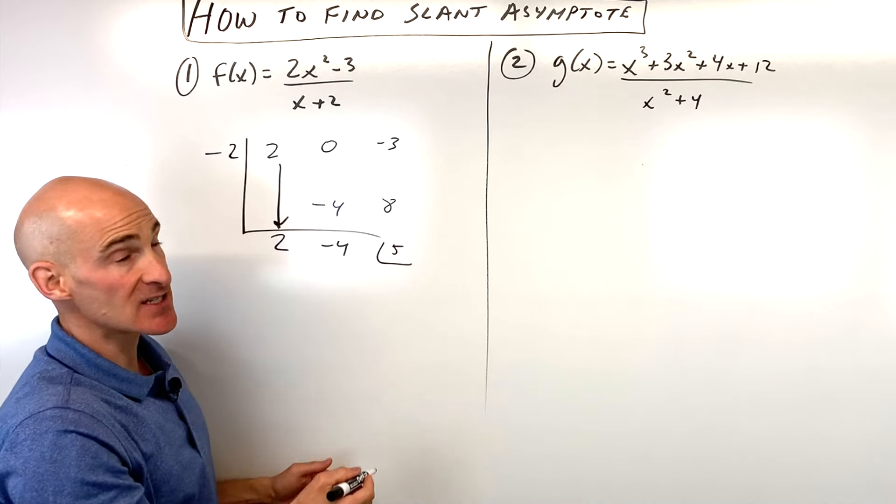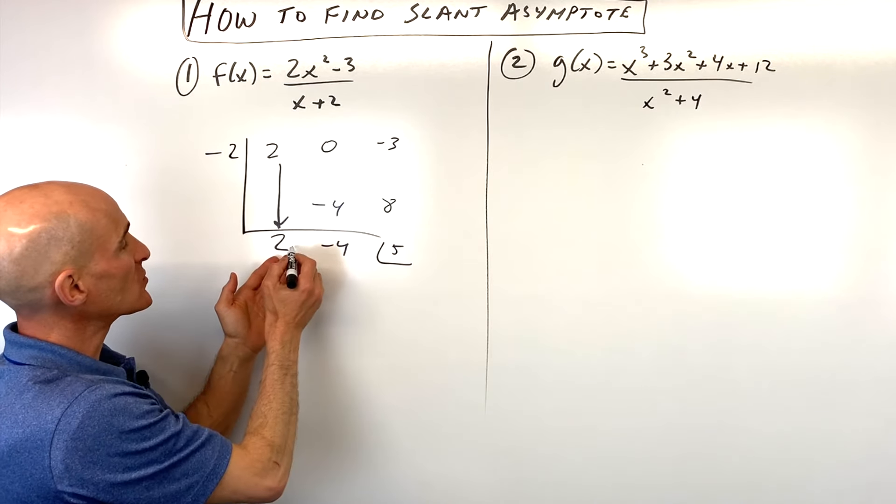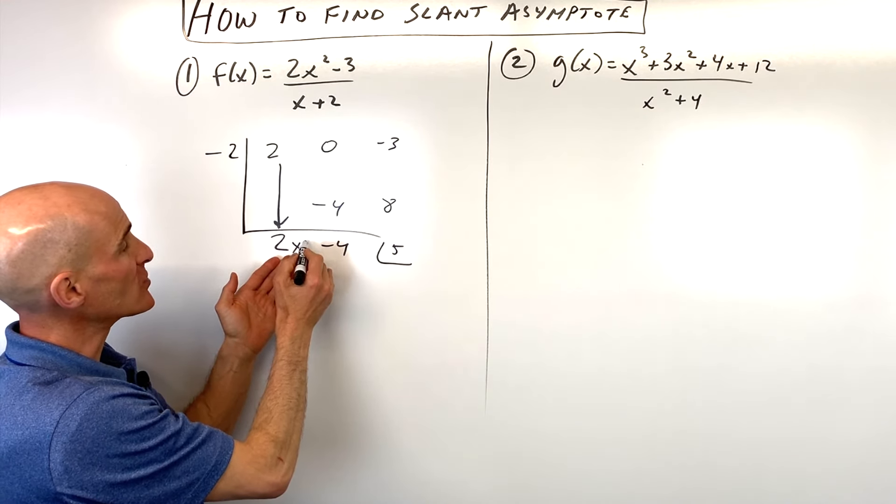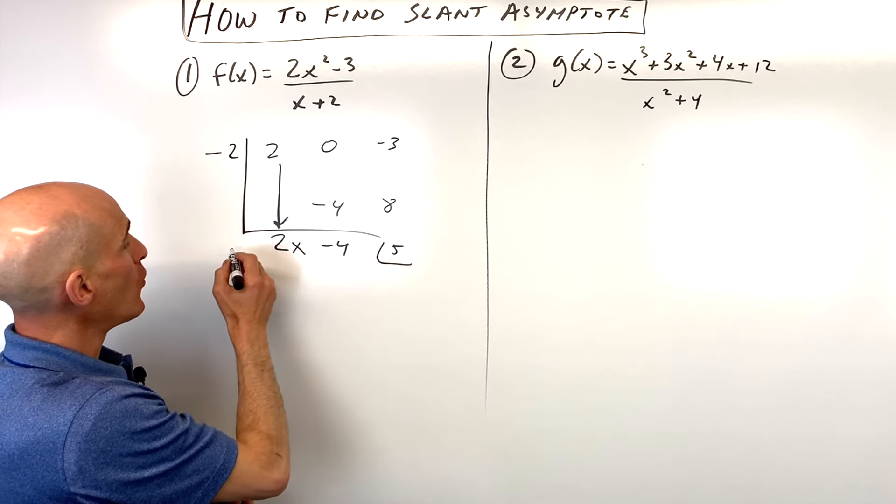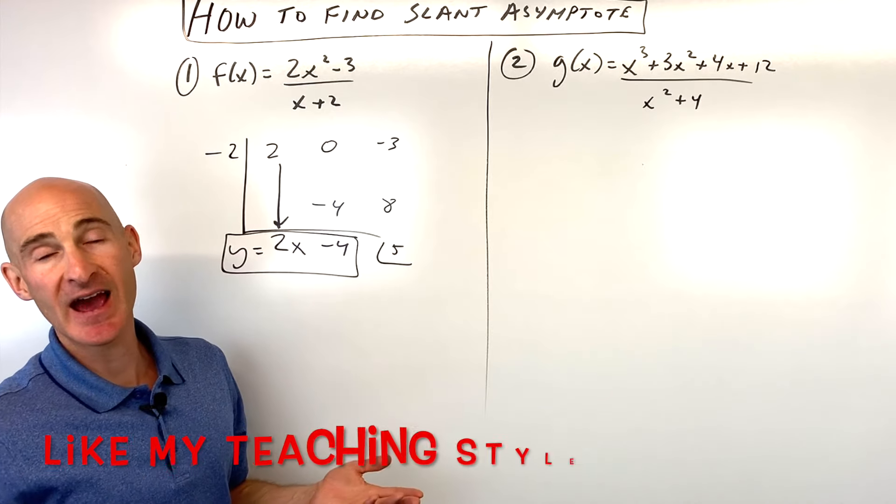This is your remainder of this last number. Since we're dividing by x to the first, this is going down by one degree. So we went from 2x squared to 2x to the first minus 4. So y equals 2x minus 4 is the equation of our slant asymptote.